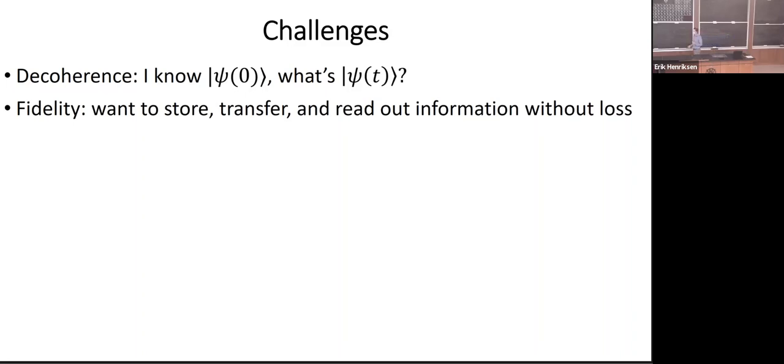What decoherence causes is a loss of fidelity of our operations. We have a need to store information, to transfer it between different degrees of freedom, to manipulate it, and to read it out. And we want to do all of this without scrambling the information. Well, if you have decoherence, then information gets scrambled.